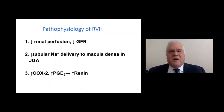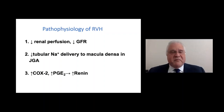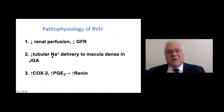What's the pathophysiology of renal vascular hypertension? Decreased renal perfusion through the renal artery due to the stenosis leads to a decreased GFR because there's less perfusion through the glomerulus. Because of decreased perfusion, there's also decreased sodium delivery in the convoluted tubule — and recall that the convoluted tubule is right next to the macula densa in the juxtaglomerular apparatus. This results in increased secretion of prostaglandins, which then stimulate renin production from the juxtaglomerular cells. There are two other mechanisms that lead to increased renin production — sympathetic nerve tone and baroreceptors — but decreased sodium delivery to the distal tubule is the primary mechanism here.